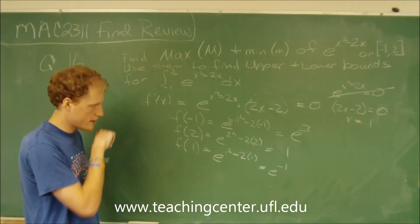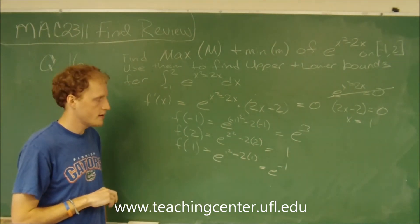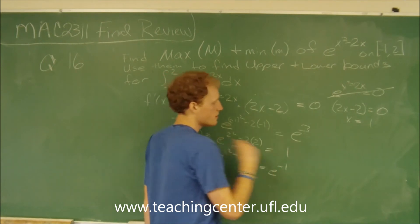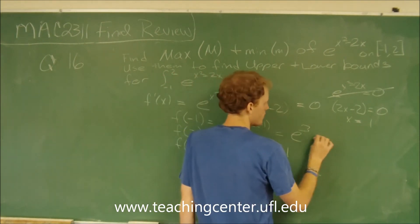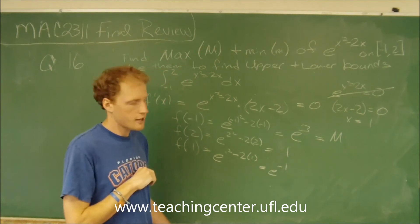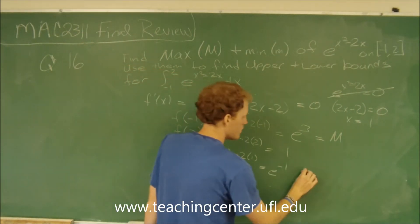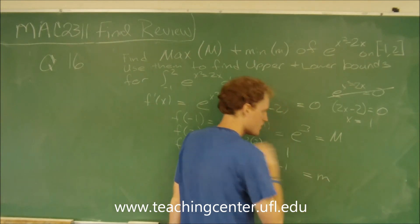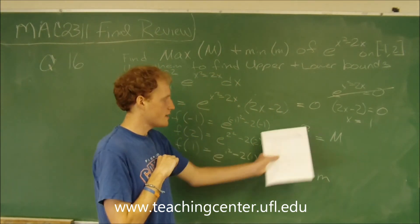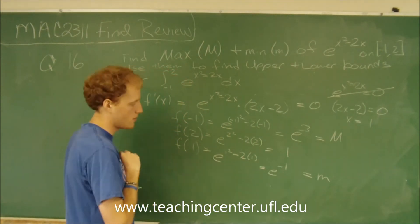Now we need to find our maximum value and our minimum value. The maximum value is going to be e cubed. The minimum value is e to the negative 1.